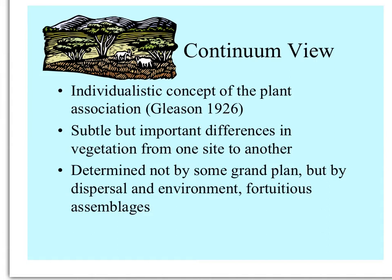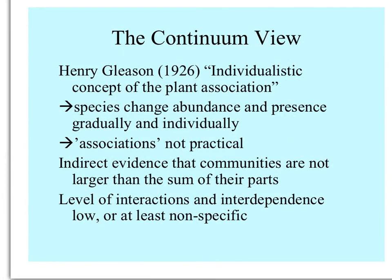Gleason found, looking at floras from different places, that there were differences in vegetation from one site to another, so maybe an association wasn't quite the right way to look at things. Communities, in his opinion, weren't determined by a grand plan, but by the dispersal of each species and the environment they required. So each community was a fortuitous or random assemblage. This Gleason view was supported by the fact that species change their abundance and presence gradually over the landscape and individually.